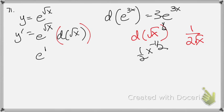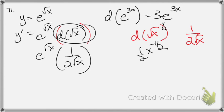So this is just going to be e to the root x and then times this guy, which is 1 over 2 root x, and just squish them across. So your final answer is e root x all over 2 root x.